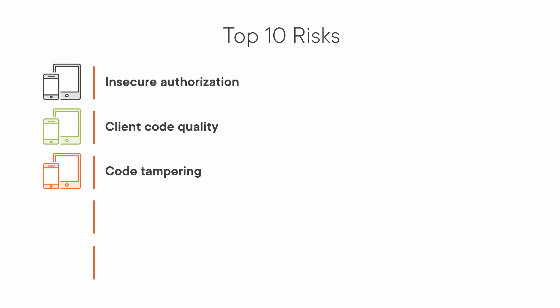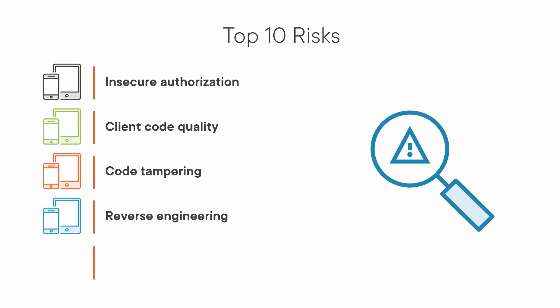We also have M9: Reverse Engineering. Mobile apps — just like almost everything else we've talked about in this series — can be reverse engineered using automated tools or manually by examining the application binaries after decompiling.